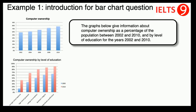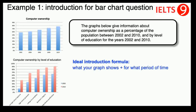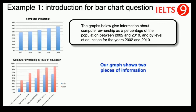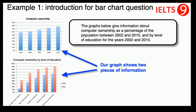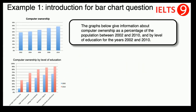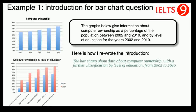Alright, remember our ideal introduction formula: write what your graph shows and for what period of time. In this case, the graph shows two pieces of information. A: information about computer ownership as a percentage of the population. And B: information about computer ownership by level of education. The time period is years 2002 and 2010. So here is how I rewrote the introduction: 'The bar charts show data about computer ownership with a further classification by level of education from 2002 to 2010.'